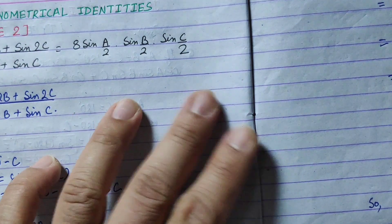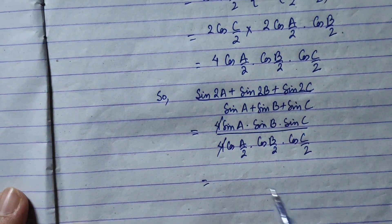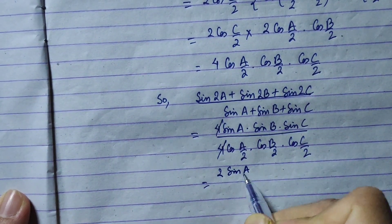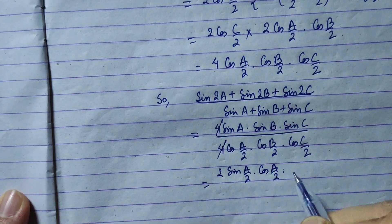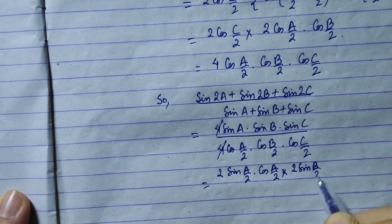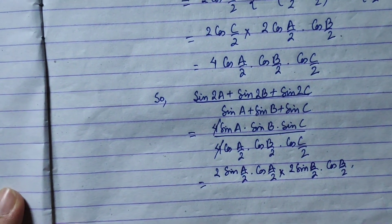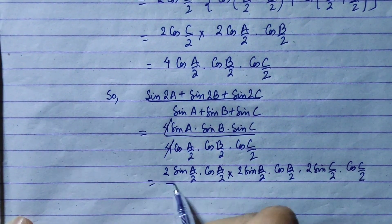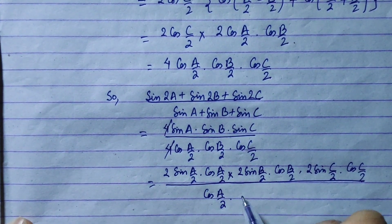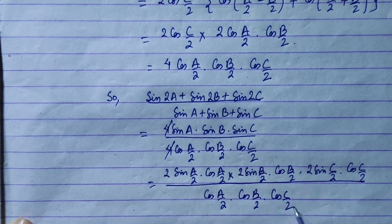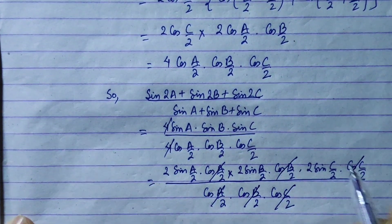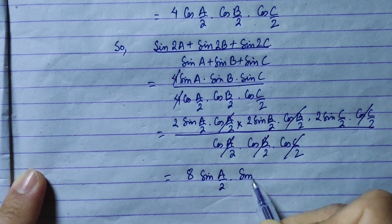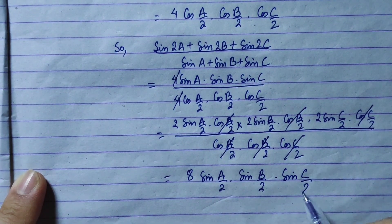Expanding sinA = 2·sin(a/2)·cos(a/2), sinB = 2·sin(b/2)·cos(b/2), sinC = 2·sin(c/2)·cos(c/2). The cos(a/2)·cos(b/2)·cos(c/2) terms cancel, and 2·2·2 = 8. So we get 8·sin(a/2)·sin(b/2)·sin(c/2), which is the RHS. Proved.